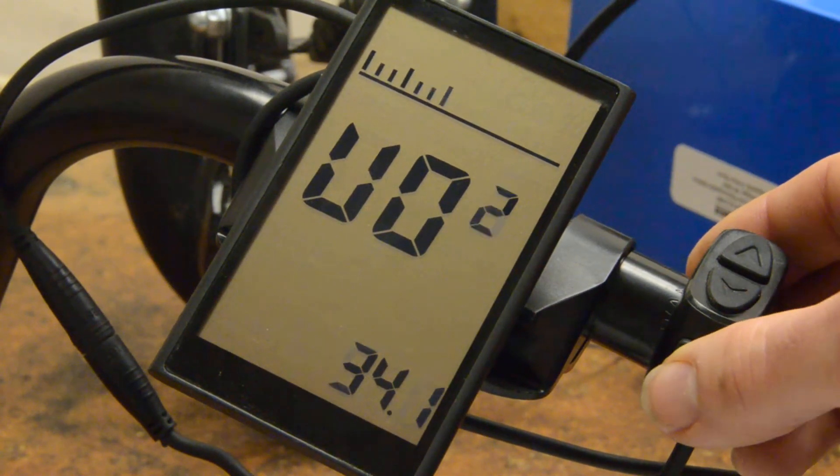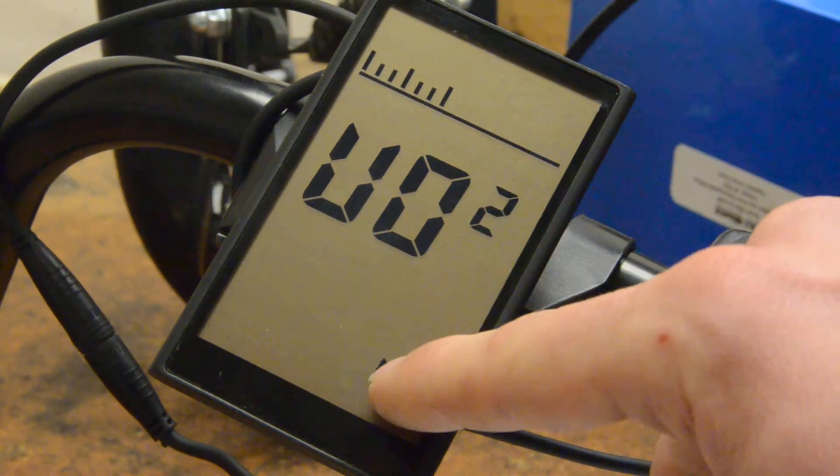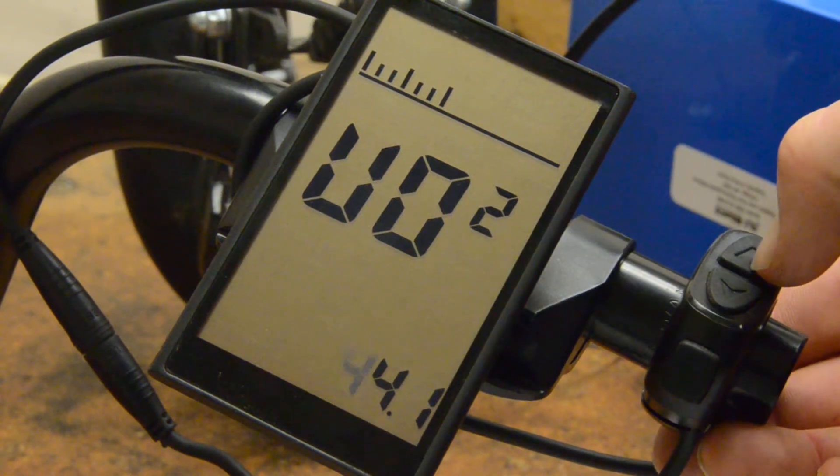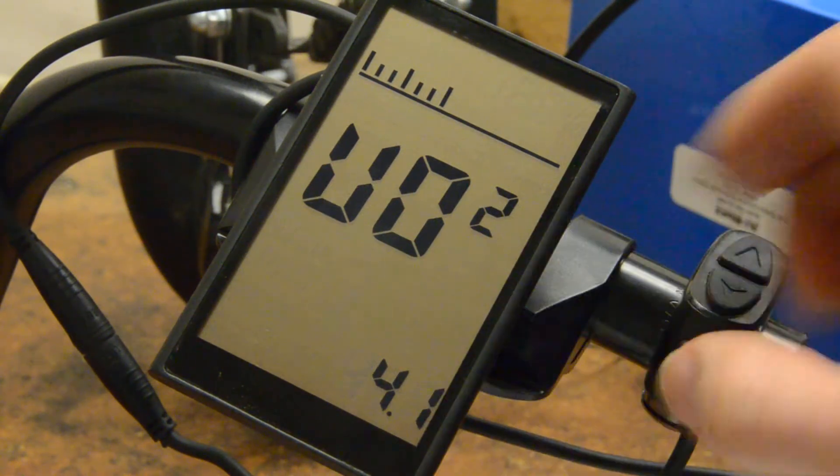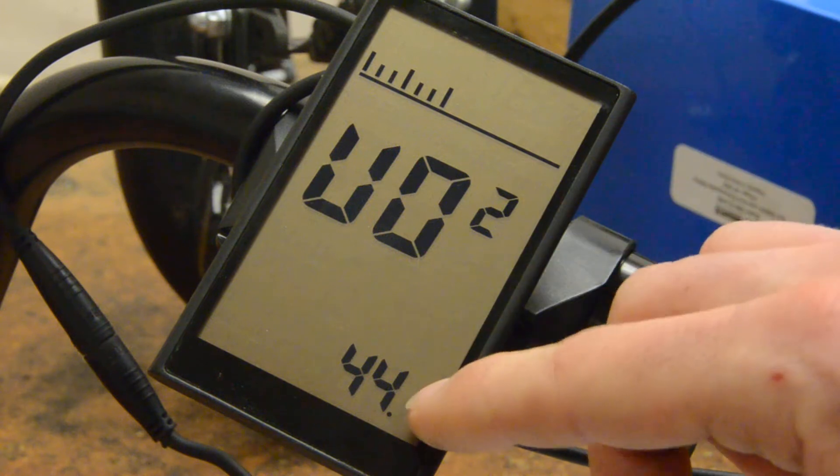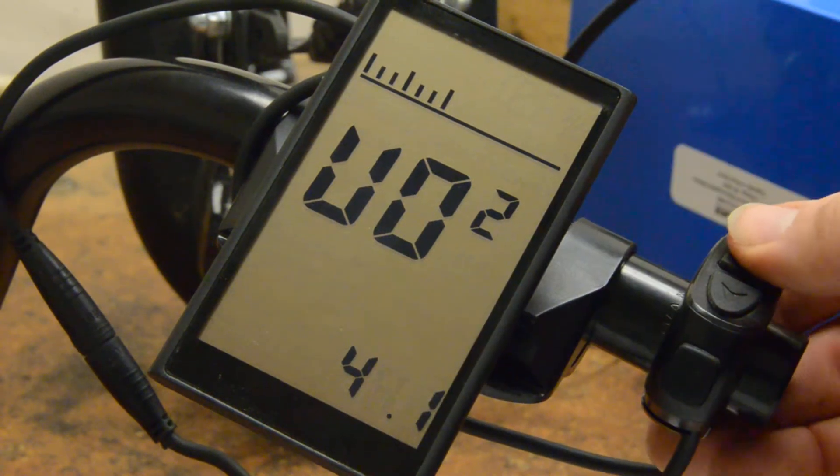Now the M button will advance us to VO2. The 3 is flashing so use the up arrow to change it to 4, use the M button to go to the next digit. We're going to set this to 47.2.